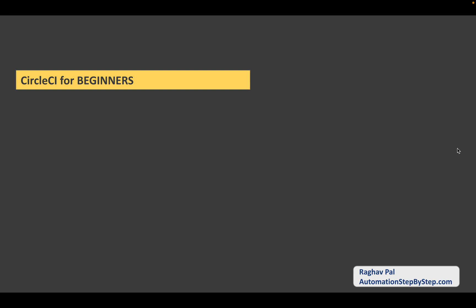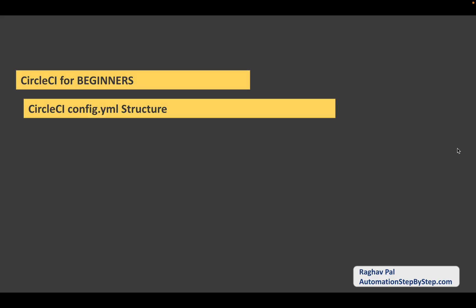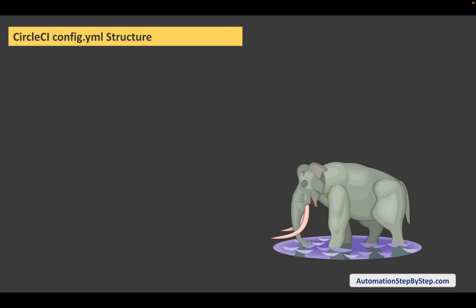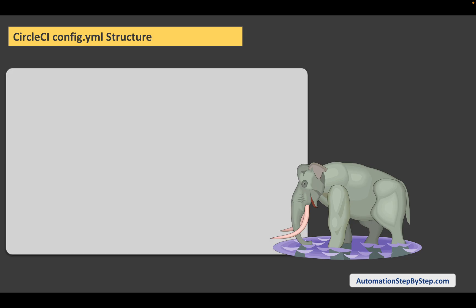Hello and welcome, I am Raghav, and in this session we are going to understand the config.yml file structure. This is the core of CircleCI and this is where we put all our instructions, jobs, and workflows. If you have seen the earlier session, you have already seen a config.yml file, but today we are going to understand each and every section of this file. I will go step by step and start from scratch. Let's get started — before I take you to the config file, let us see a mnemonic.